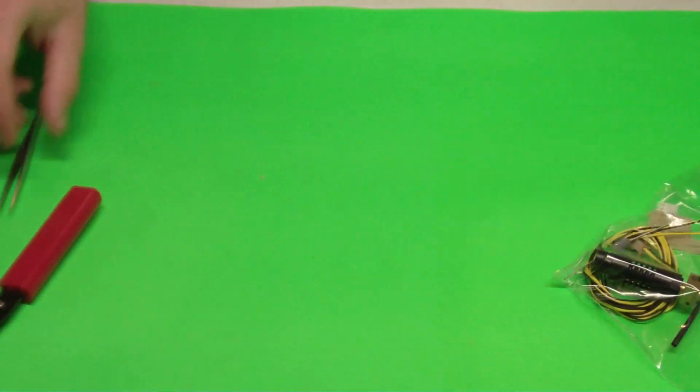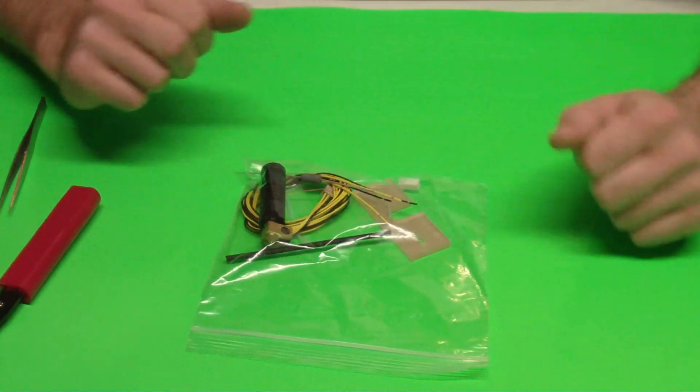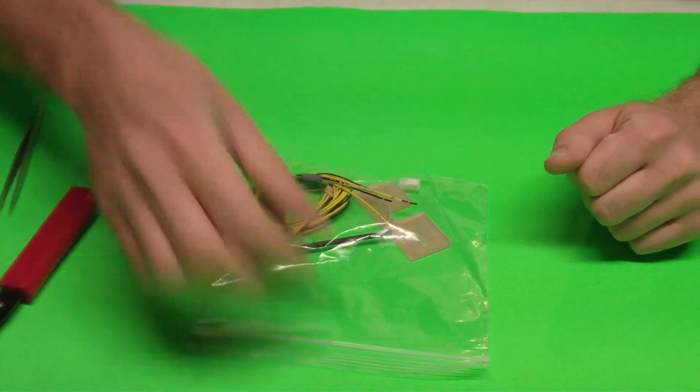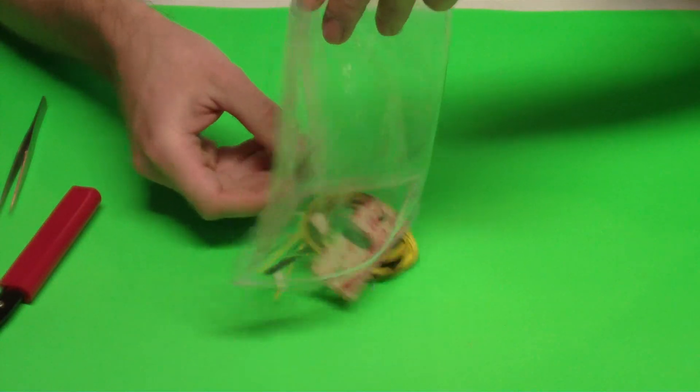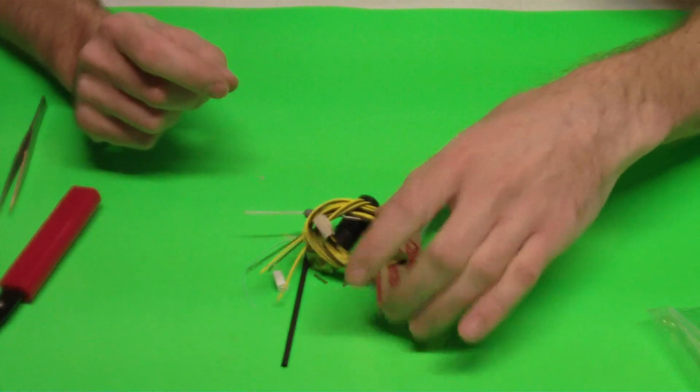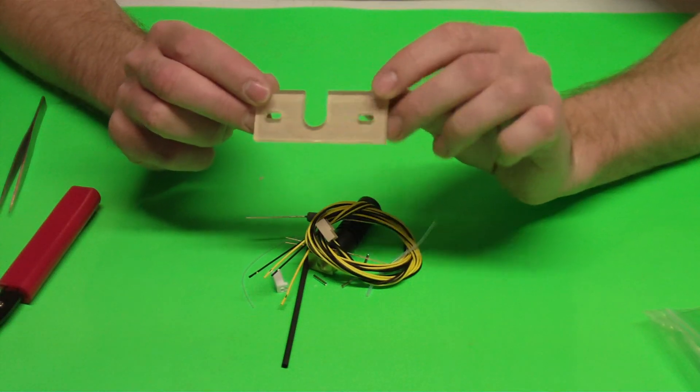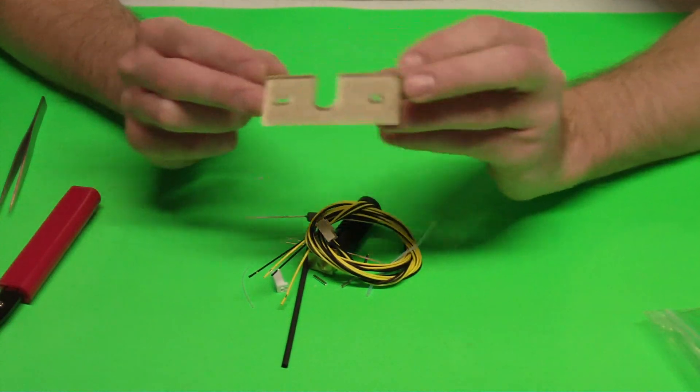Then you're also going to need, of course, your J-Head hot end with the install kit. So first off, if we open up our kit, let me show you what we have. You're going to have your acrylic mounting piece, and we're going to use that later on. That's at the very end.